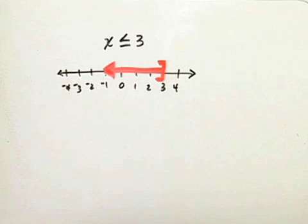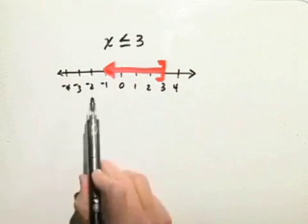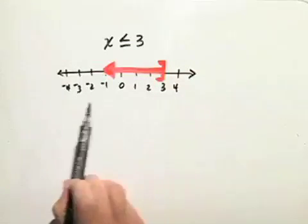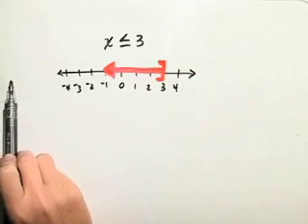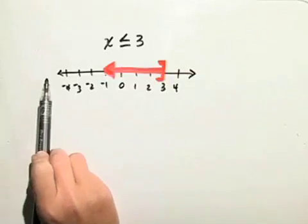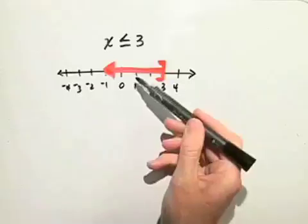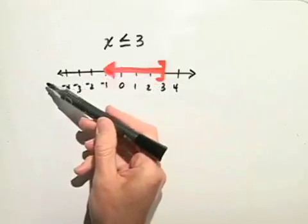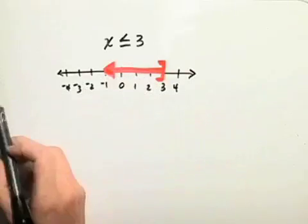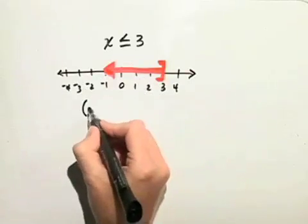Now we need to write this in interval notation. When writing in interval notation, start at the left-hand side of the graph and write the first thing you see all the way to the right-hand side. This arrow indicates it goes infinitely in the negative direction, so it starts at negative infinity.